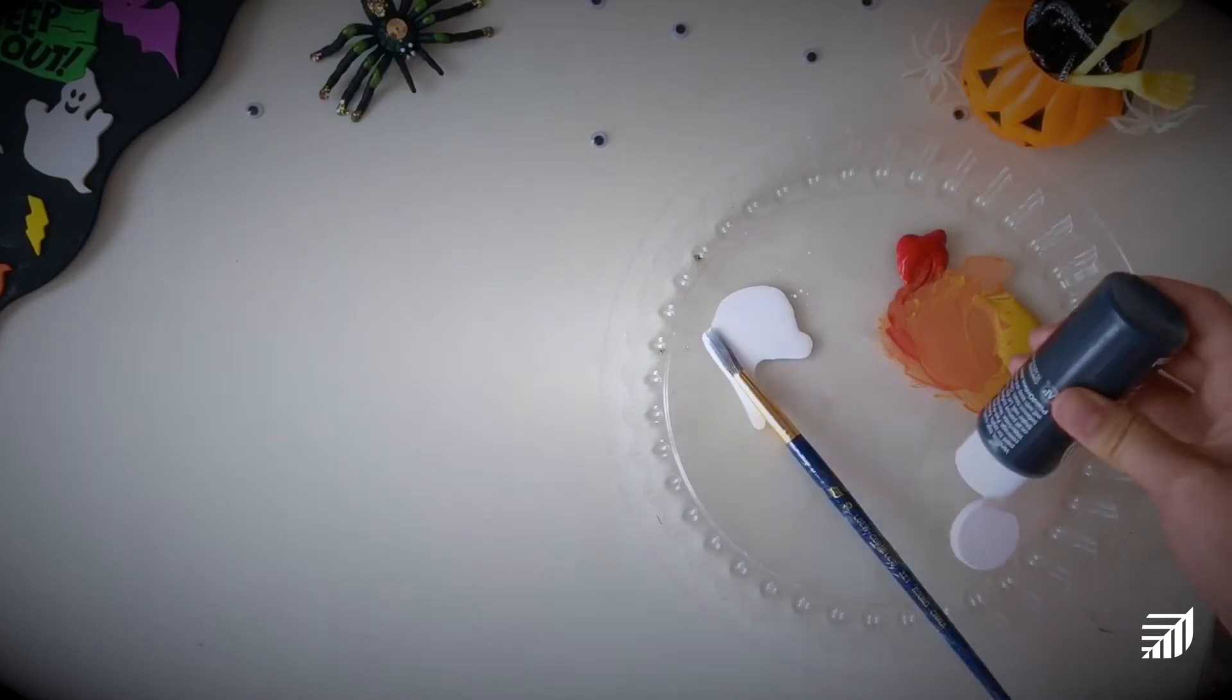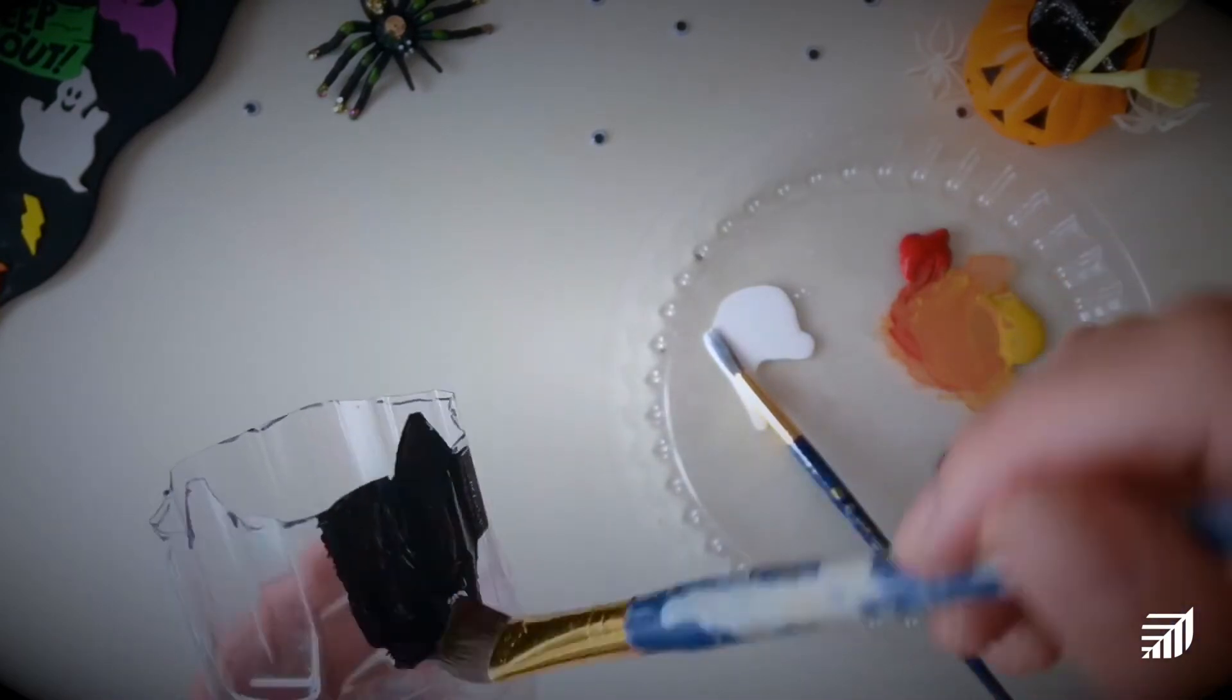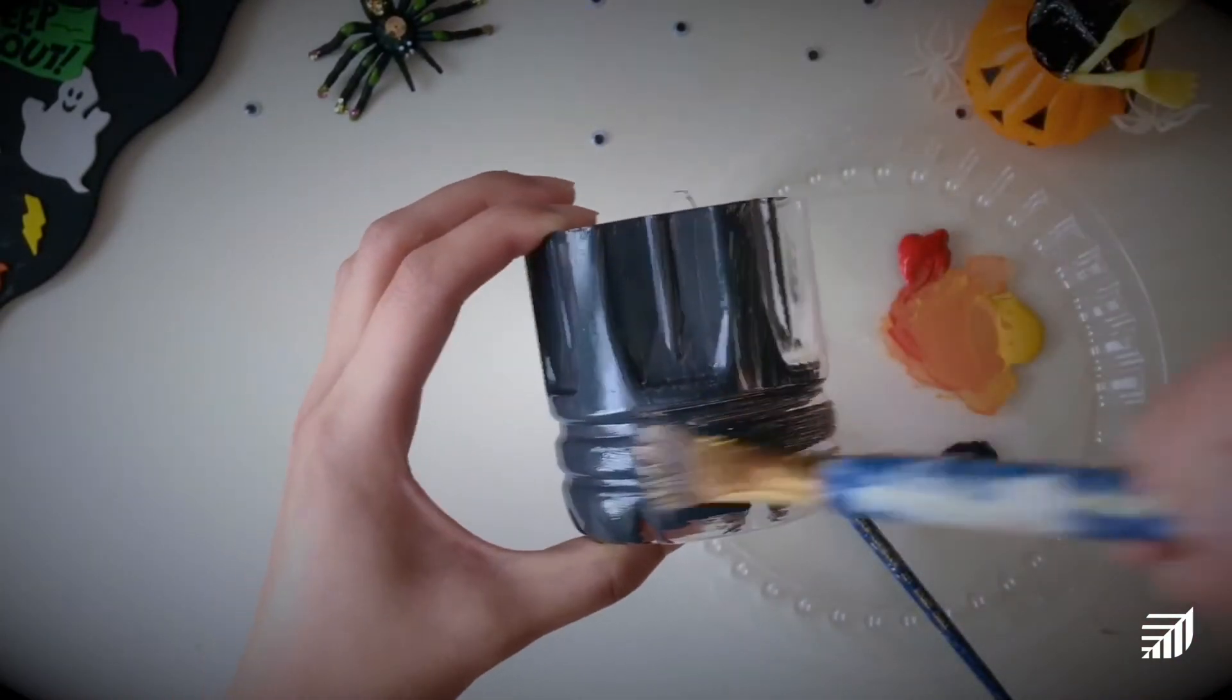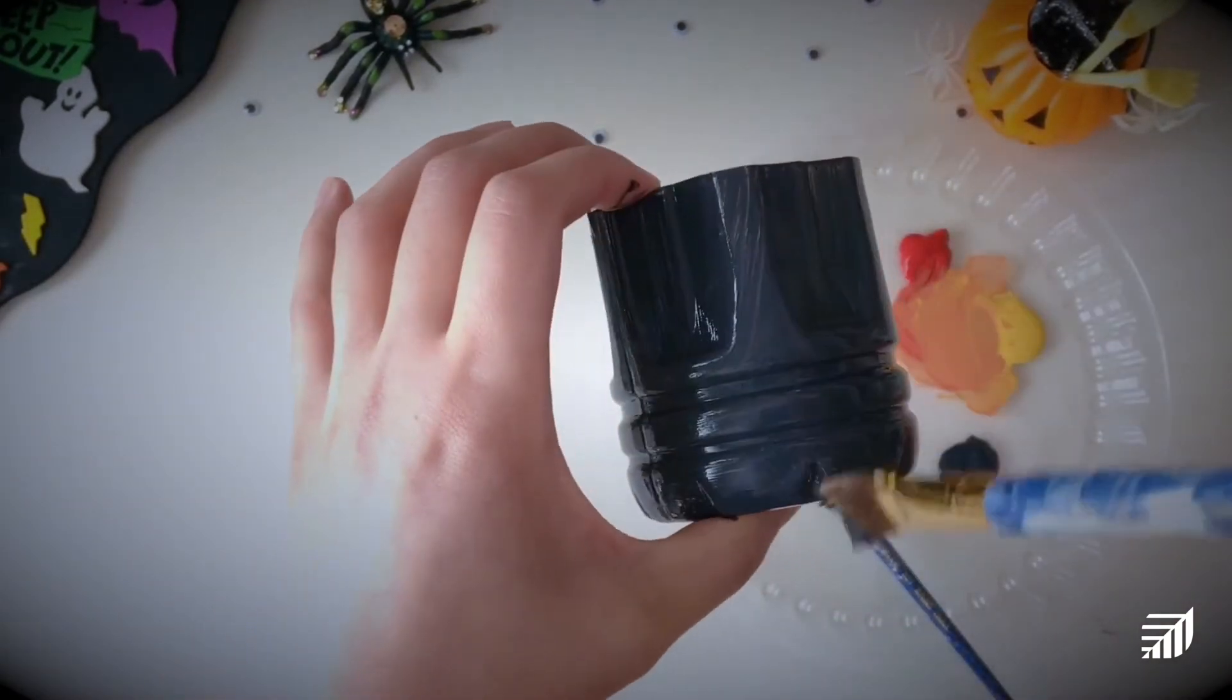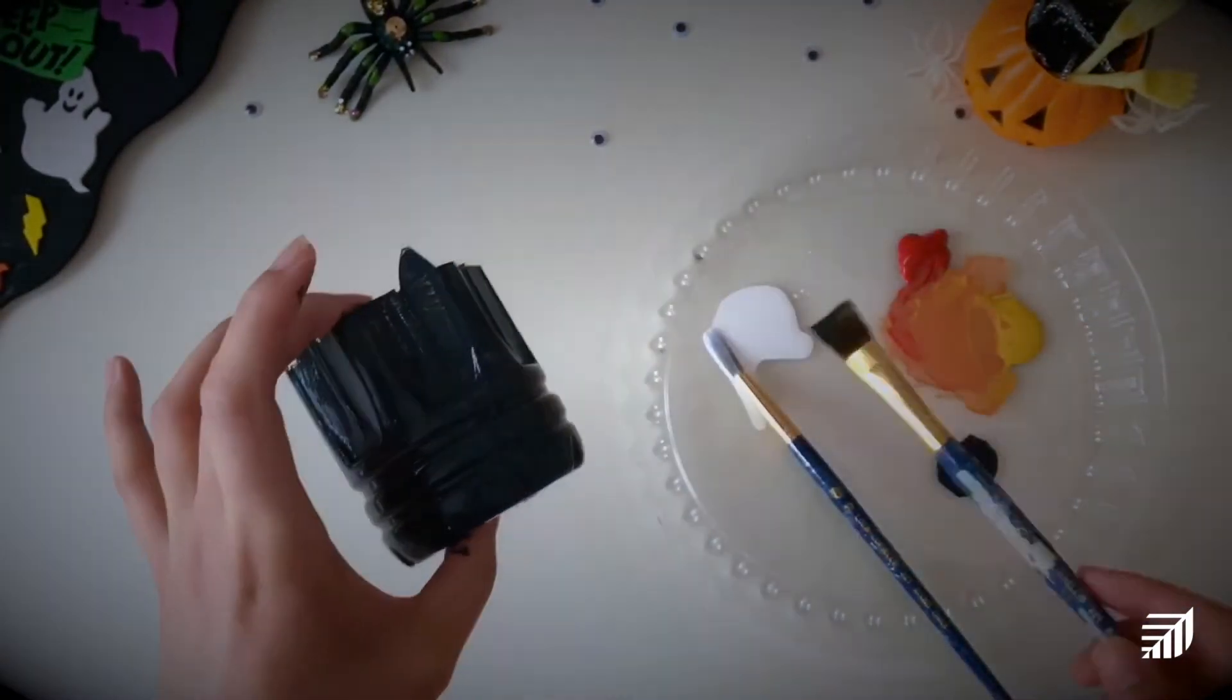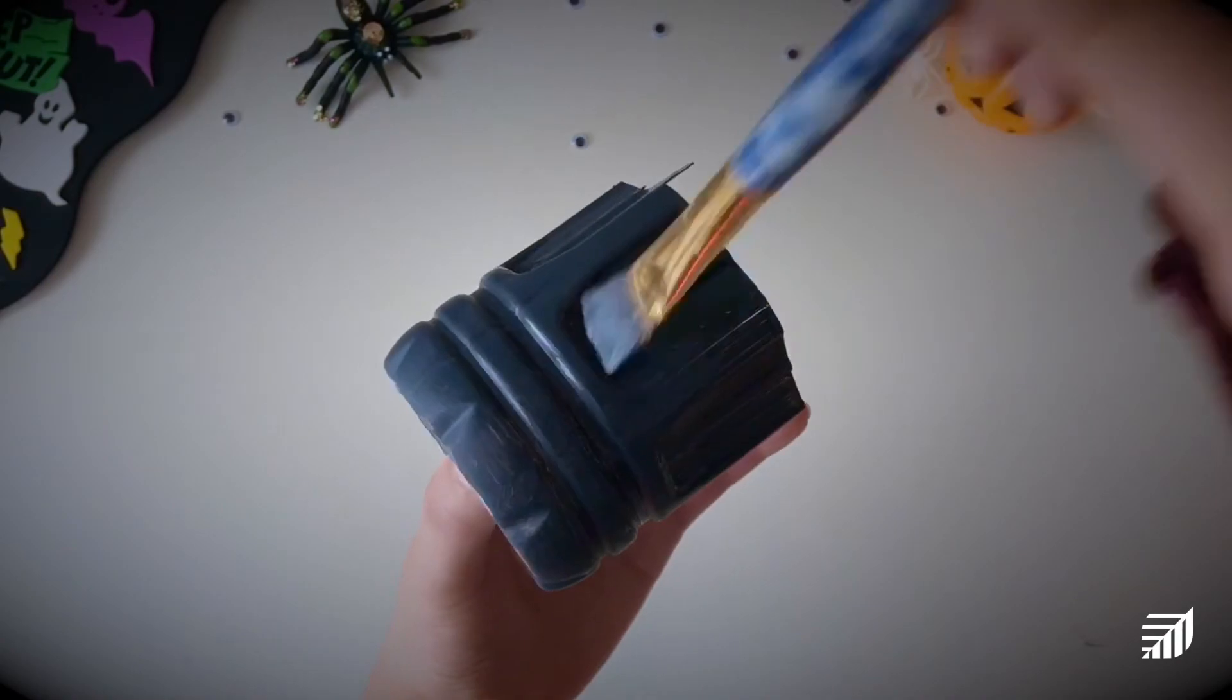Once you have your bottle cut out, it's time to paint. We're going to be using some black paint for our cat and I'm just going to apply my first layer all over the outside of the bottle. We're going to let that dry completely and then go and apply our second layer so that we can get an opaque black.